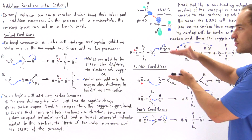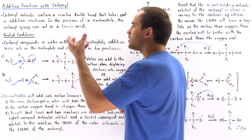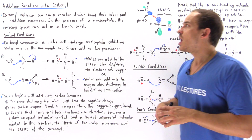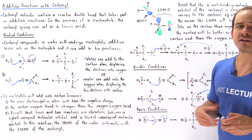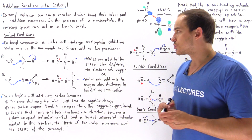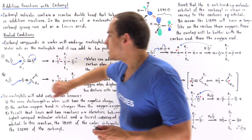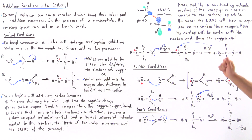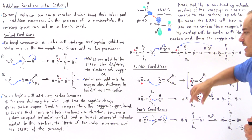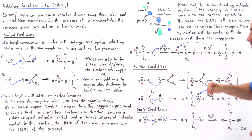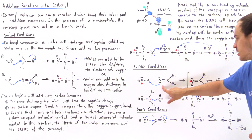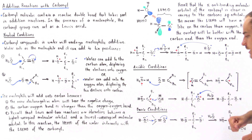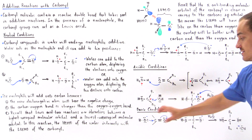Basically, these are the three conditions under which the nucleophilic addition reaction of the carbonyl group takes place. Under neutral conditions, water acts as the nucleophile. Under acidic conditions, the first step is protonation of the oxygen, then water acts as the nucleophile. Under basic conditions, the hydroxide acts as our nucleophile.